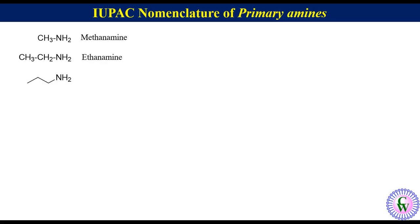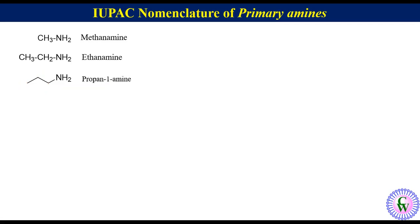For n-propylamine, the general IUPAC name is alkane-X-amine. In 3-carbon or higher amines it is necessary to mention the position of the amino group, so we need to number the carbons of the parent chain. The carbon attached to the amine is given number 1, so the numbering will be 1, 2, and 3. Here we can see that there are 3 carbons in the parent chain with X equal to 1, so the IUPAC name will be propane-1-amine.